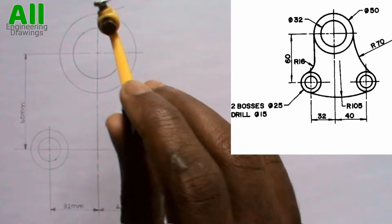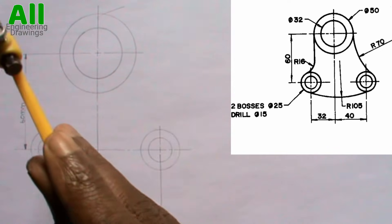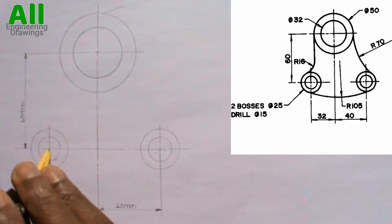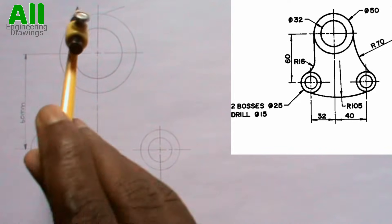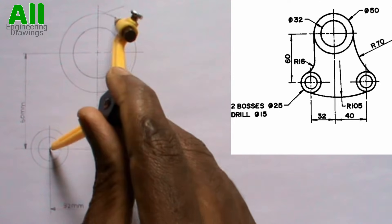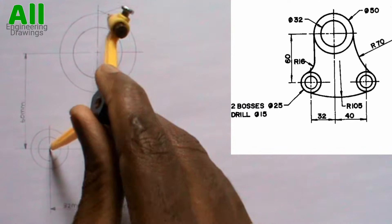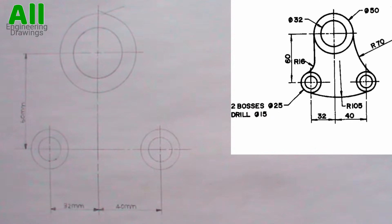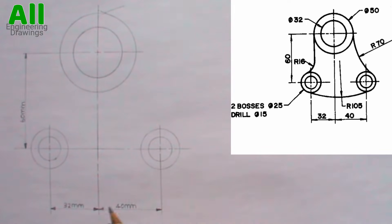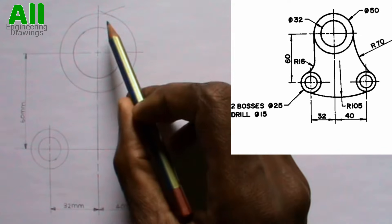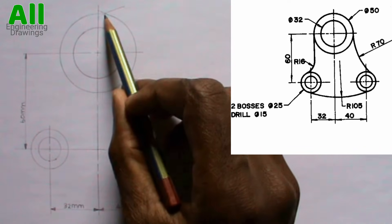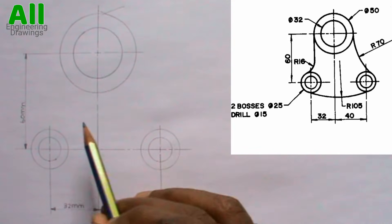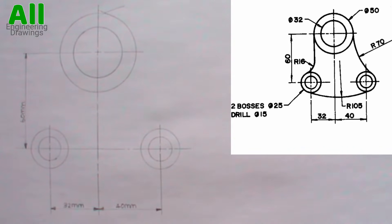I will also place my compass on the centre of this circle, then cut an arc to intersect the previous arc I cut. Since the radius of the tangential arc is 105mm, I will place my compass on the point where the arcs intersect, then produce the tangential arc.